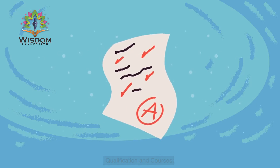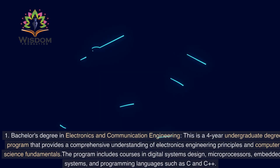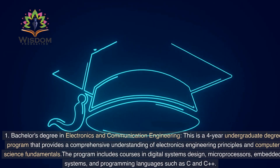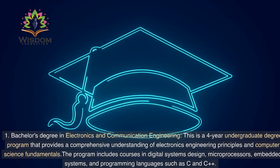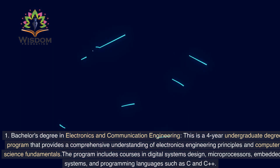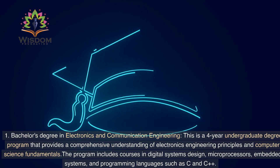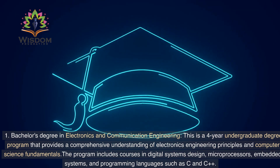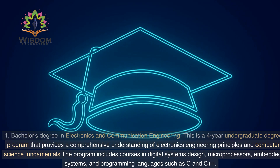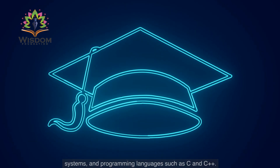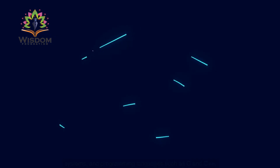Qualification and Courses. 1. Bachelor's Degree in Electronics and Communication Engineering — This is a four-year undergraduate degree program that provides a comprehensive understanding of electronics engineering principles and computer science fundamentals. The program includes courses in digital systems design, microprocessors, embedded systems, and programming languages such as C and C++.